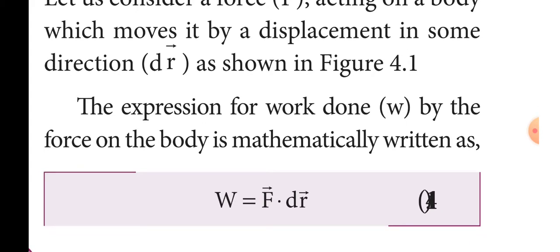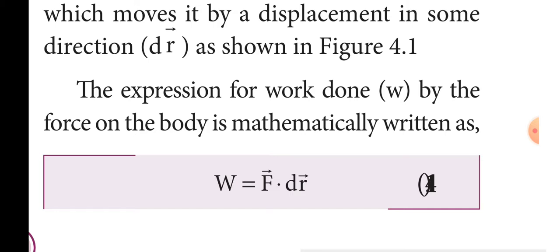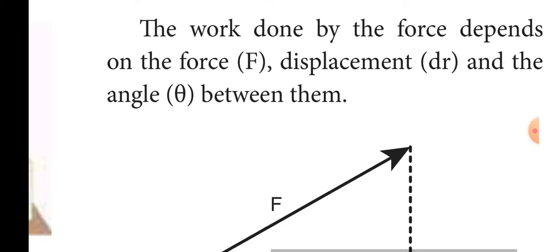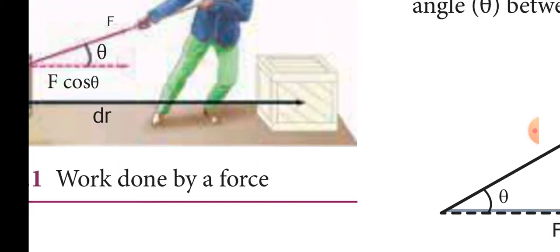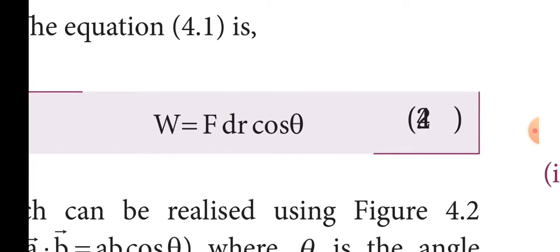The equation can be represented as W = F⃗ · dr⃗, which simplifies to W = F·dr·cosθ, where F is the applied force, dr represents the displacement of the body, and θ is the angle between the applied force and the displacement of the body.